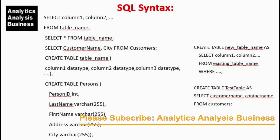SQL syntax. To select columns: SELECT column1, column2 FROM table_name. Or SELECT * FROM table_name. Example: SELECT customer_name, city FROM customers. To create a table: CREATE TABLE table_name (column1 datatype, column2 datatype, column3 datatype); — for example, CREATE TABLE persons (person_id INT, last_name VARCHAR(255), first_name VARCHAR(255), address VARCHAR(255), city VARCHAR(255)); You can also create a table from an existing table: CREATE TABLE new_table_name AS SELECT column1, column2 FROM existing_table_name WHERE...; — for example, CREATE TABLE test_table AS SELECT customer_name, contact_name FROM customers. This syntax is taken from w3schools.com, which is a very good website for beginners to start coding.